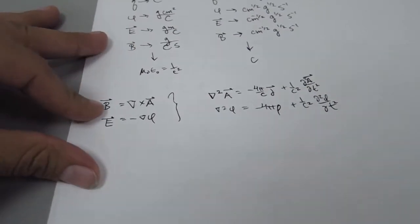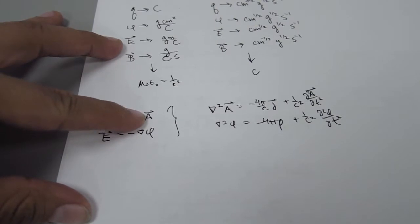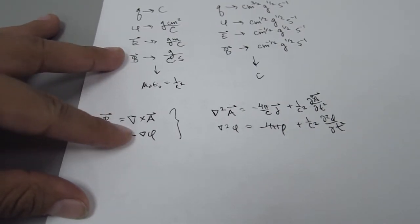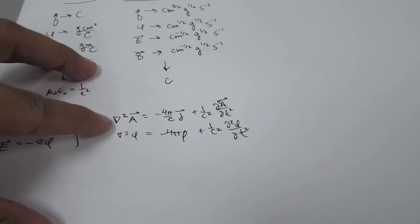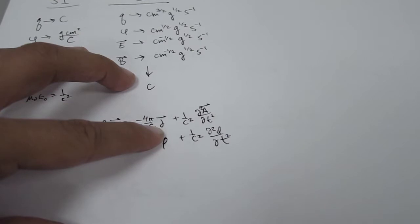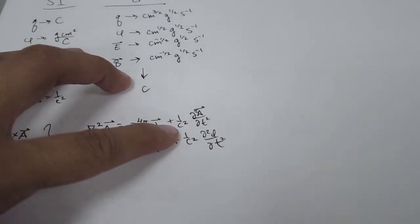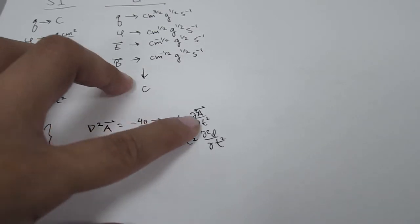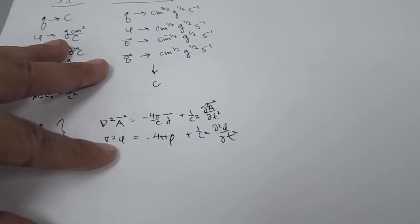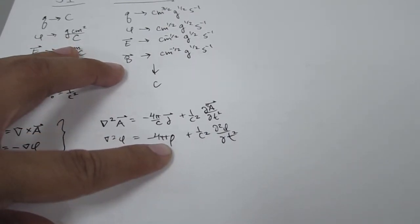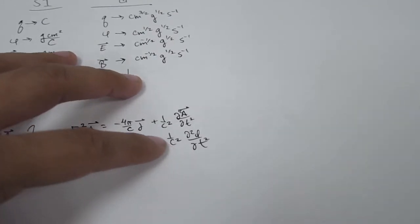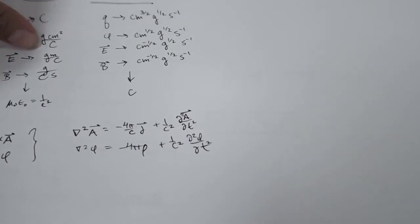Hopefully you'll recall that the magnetic field can be written as the curl of a vector potential, and in electrostatics the electric field can be given by minus the gradient of the potential. So the Laplacian operated on the vector potential equals minus 4pi over the speed of light times the current density, plus 1 over c-squared times the second time derivative of the potential.